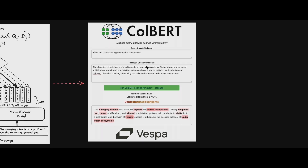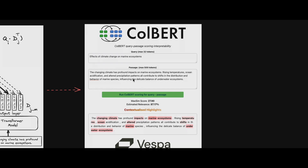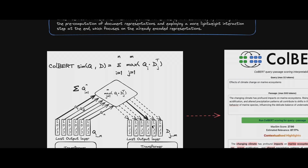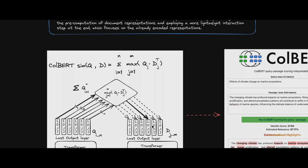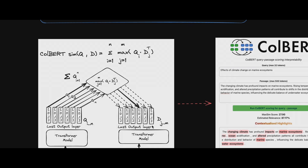Here's a good example. I have a passage and a query: 'effects of climate change on marine ecosystems.' All the query tokens are being matched inside the passage, creating a kind of heat map. Where similarity is high the color is darker; where it's low the color is lighter. This is how ColBERT works using the late interaction mechanism to find the best matches.